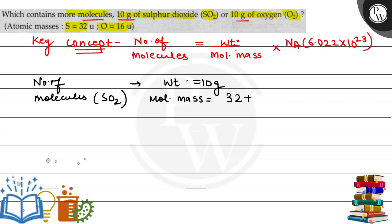plus oxygen, which is 16. We have 2 oxygens, so that's 32. This gives us 64 grams. Number of molecules for SO2 will be given weight divided by molecular mass multiplied by Avogadro's number. The answer we get is 9.4 × 10²².